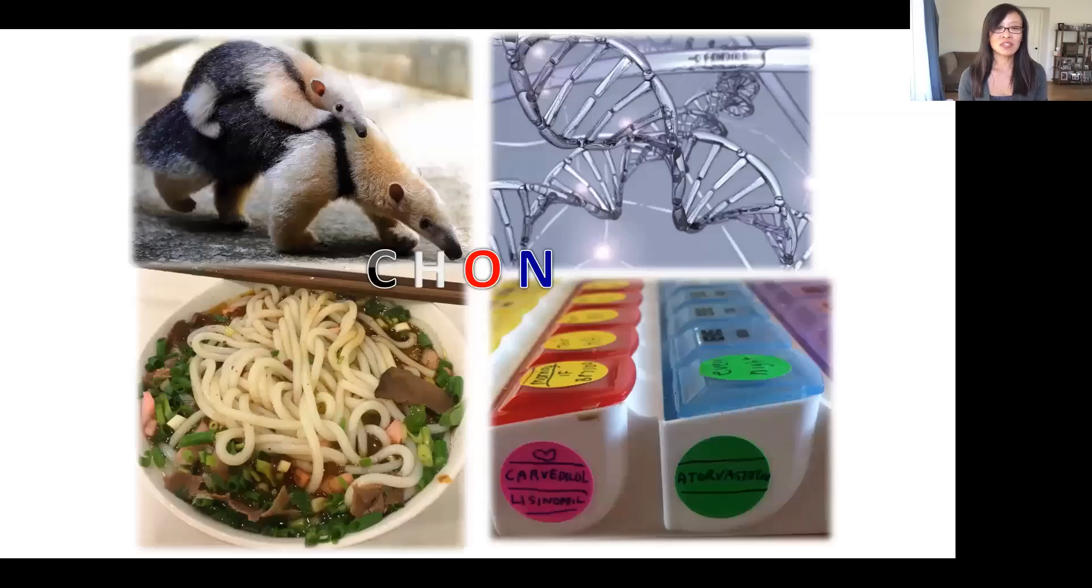Almost everything around us is made out of organic molecules: the anteater, DNA, the food you're gonna eat later today, as well as my grandmother's heart medication are all organic molecules made of carbon, hydrogen, oxygen, and nitrogen.